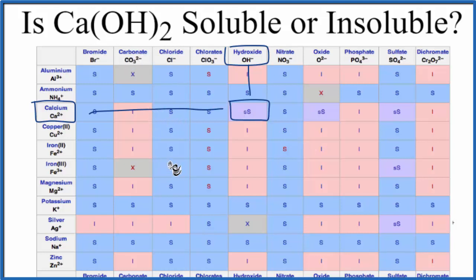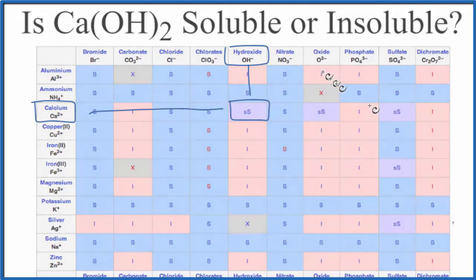This is Dr. B answering the question whether Ca(OH)2 is soluble or insoluble. It's kind of in between — it's slightly soluble. Thanks for watching.